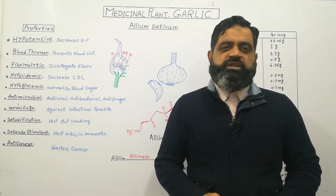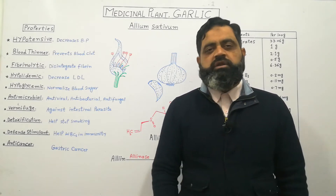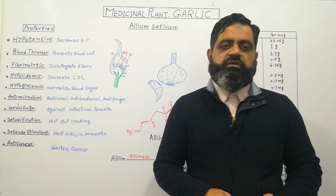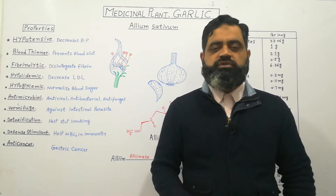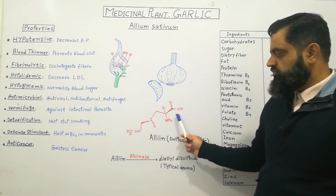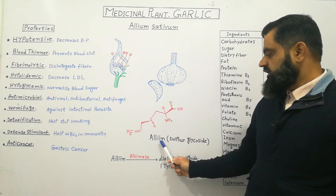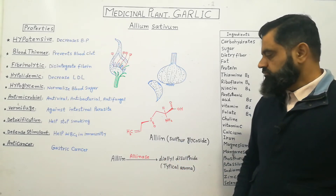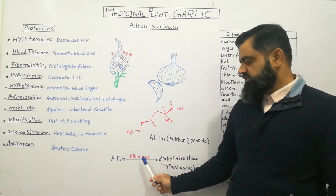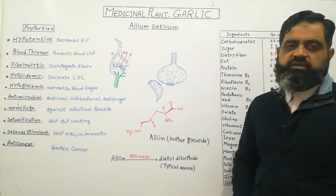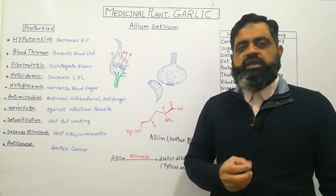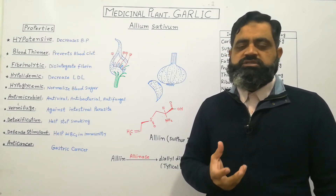Garlic gives a very strong aroma. When a person eats raw garlic, it produces a typical aroma which can be smelled in the sweat, in the breath, in the urine and all the secretions of the body. This aroma is because of a substance known as Alliin. This is the structural formula of Alliin which is present inside the garlic. Alliin is also known as Sulphur Glycoside. When the cells of the garlic are broken down or crushed, it contains an enzyme known as Allinase which breaks down Alliin into Diallyl Disulfide. This compound Diallyl Disulfide gives the typical aroma of garlic, which if eaten raw can be felt in the breath, sweat, urine and all the secretions of the body.